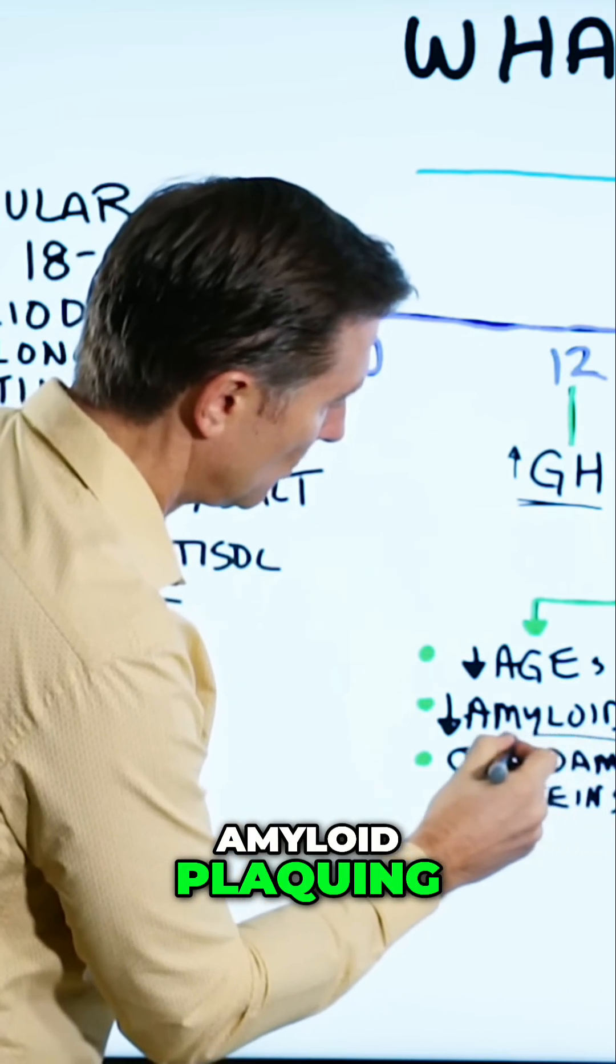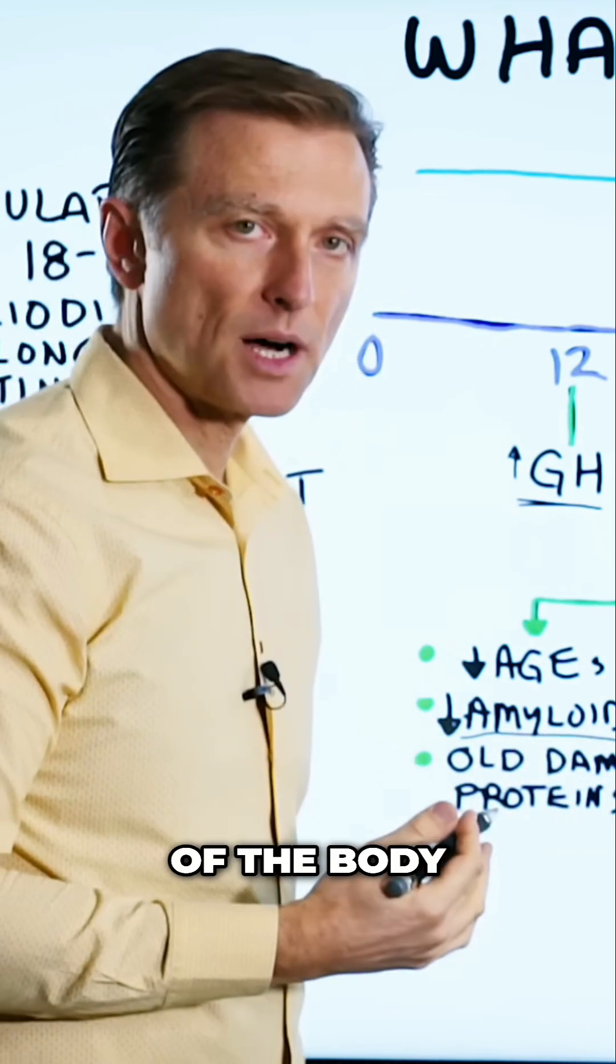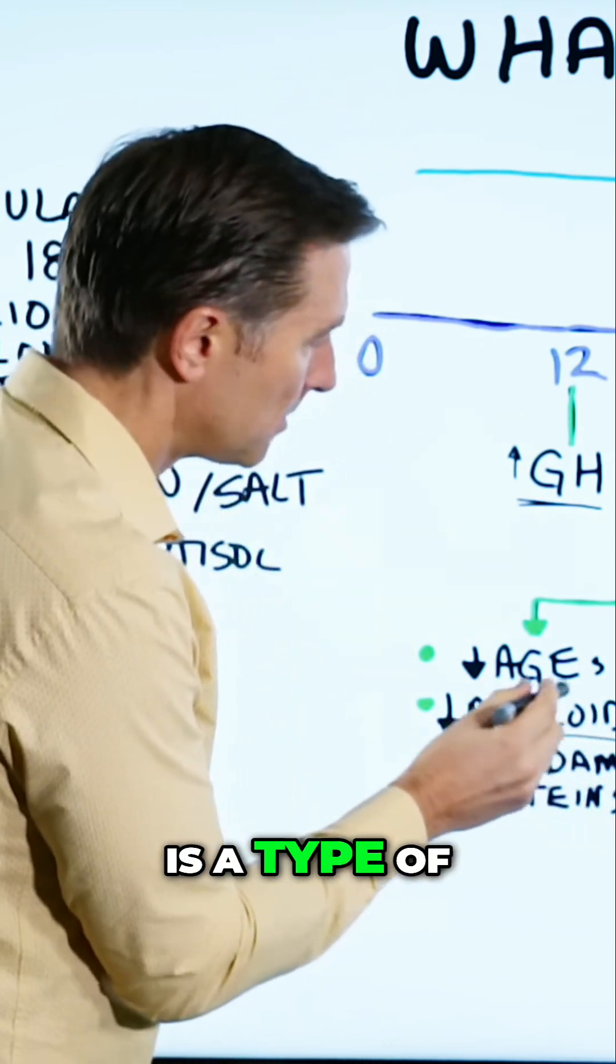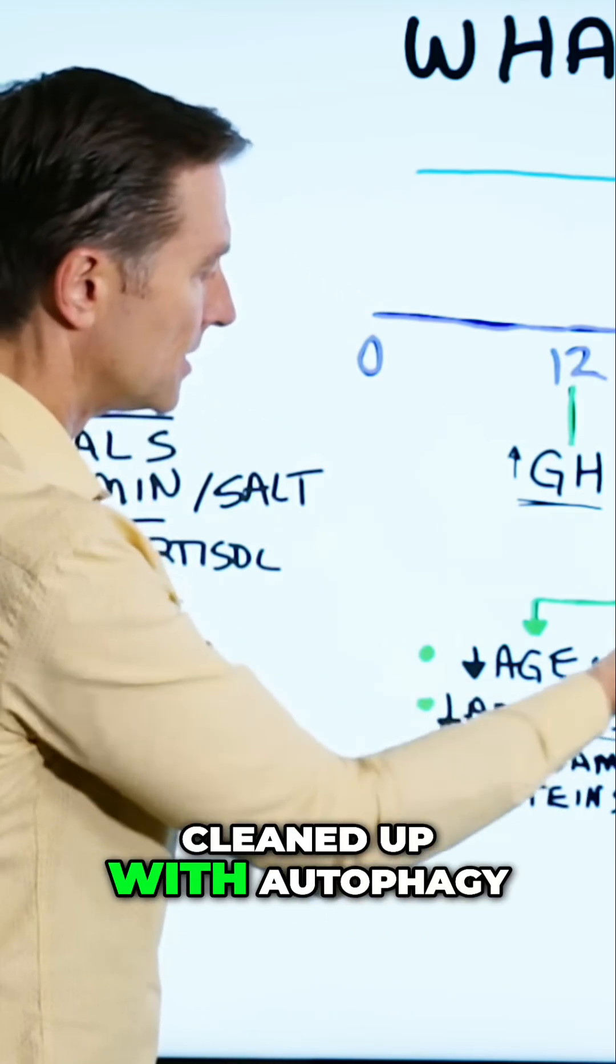Amyloid plaquing, which occurs in the brain and other parts of the body, is a type of protein that can be cleaned up with autophagy.